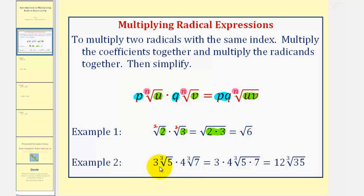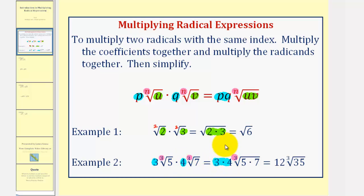Next we have three cube root of five times four cube root of seven. Once again, notice how the index is the same, and therefore we multiply the coefficients together, which in this case would be three times four. Then we multiply the radicands together, which would be five times seven. This is not going to simplify, and therefore this gives us twelve times the cube root of thirty-five.